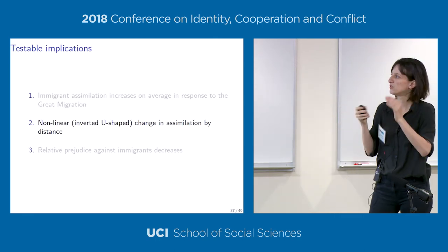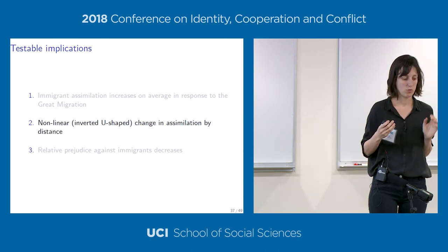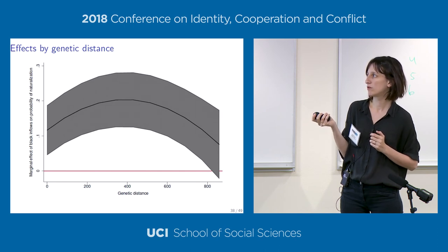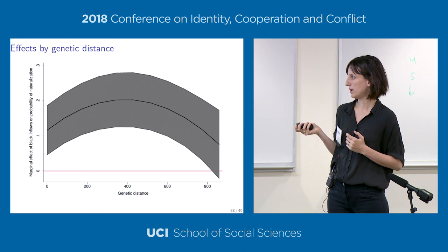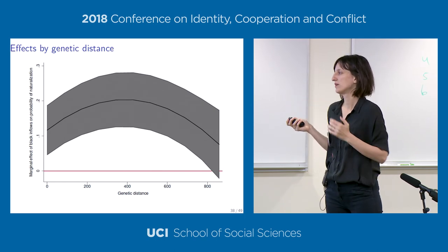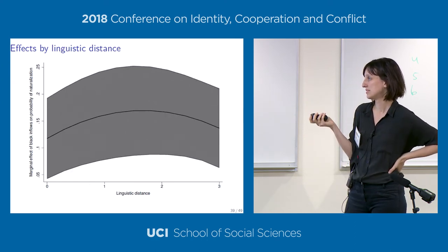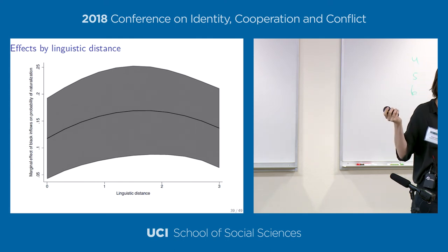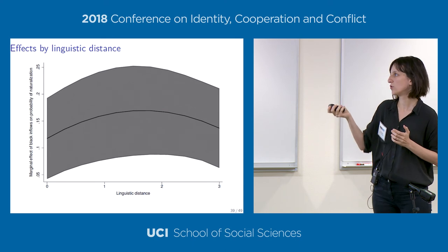The change in assimilation follows a nonlinear pattern with distance. We use measures like genetic distance—elapsed time since two populations shared a common ancestor, from Spolaore and Wacziarg—and linguistic distance based on how difficult it is for Americans to learn a given language. The marginal effect of black inflows on naturalization follows an inverted U-shape by genetic distance from the UK. We can show this nonlinear pattern using linguistic distance as well.